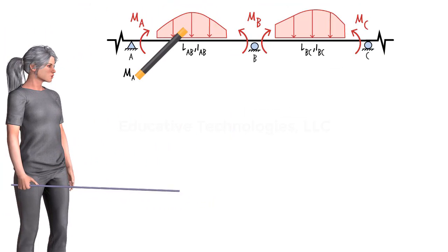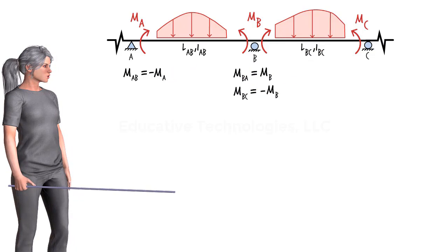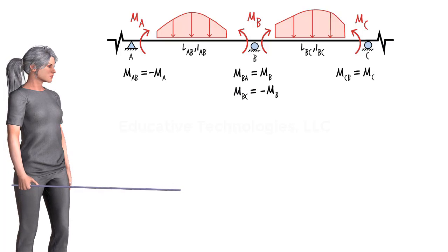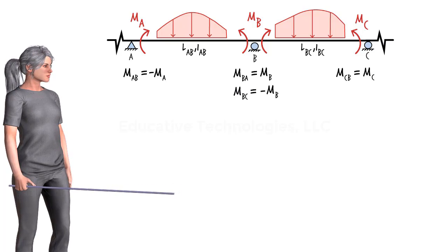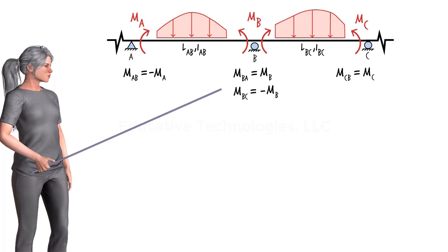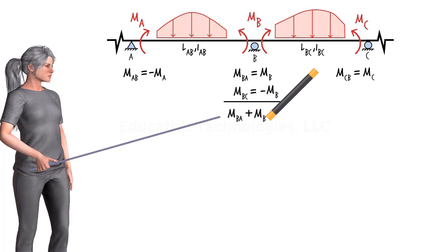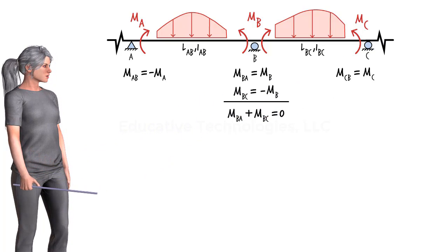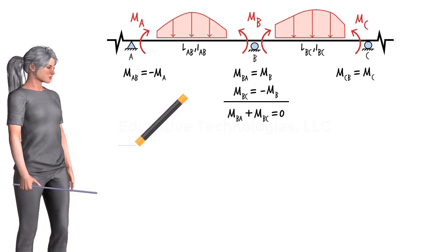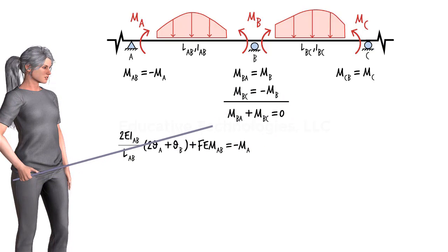Having established the relationship between the member-end moments from the slope-deflection equations and MA, MB, and MC, we are now ready to generate the three-moment equation. According to the conditions of static equilibrium, the sum of the two moments at B must be zero. Therefore, using the slope-deflection equations, we can rewrite this equation.